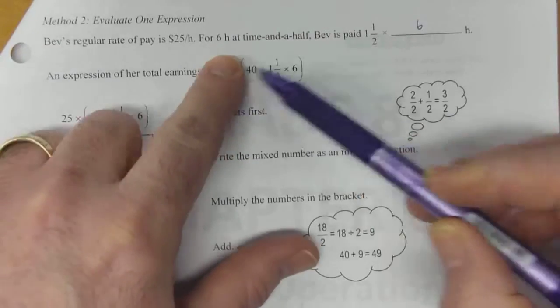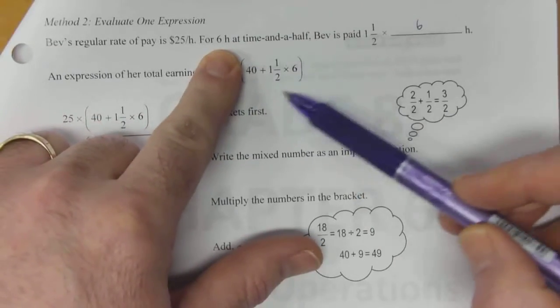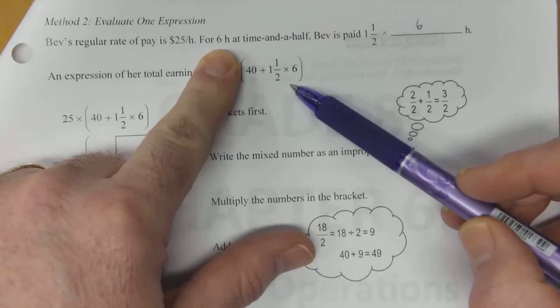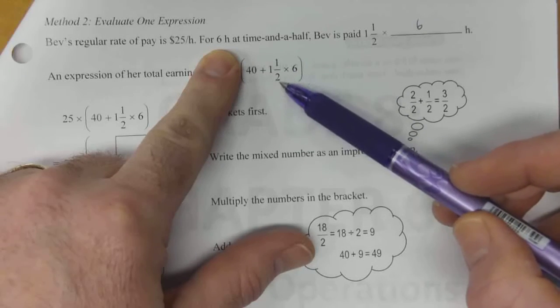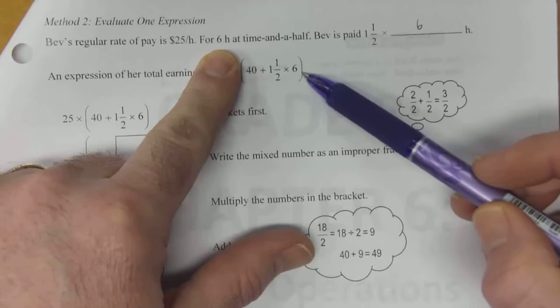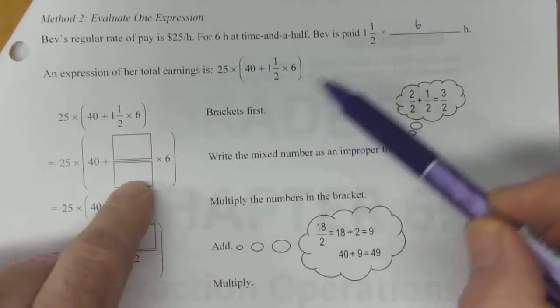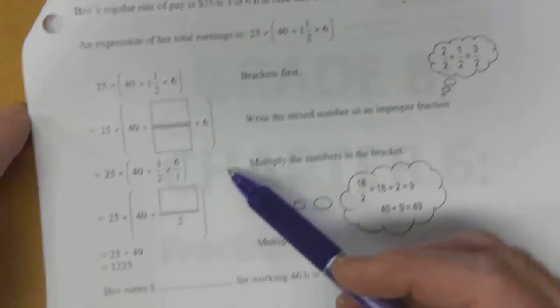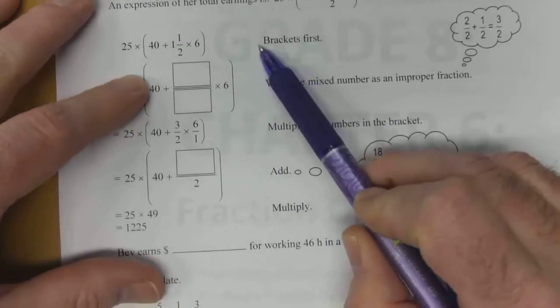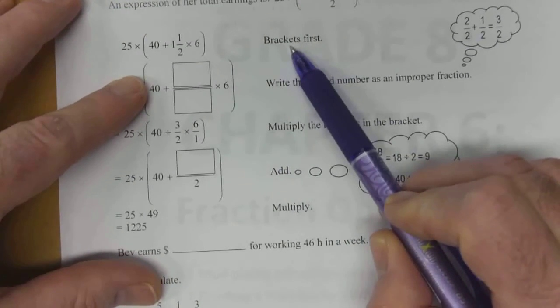So this is the rate of pay, and then this is the total number of hours that she's going to get paid for. So you're multiplying that overtime hours of six times that one and a half. You can do this all in one expression, and then solve it. So with BEDMAS, brackets come first.